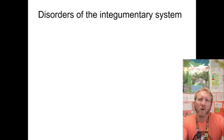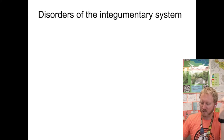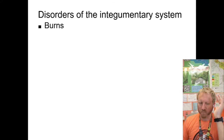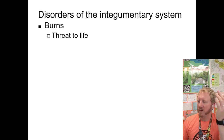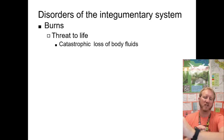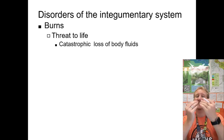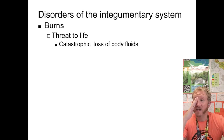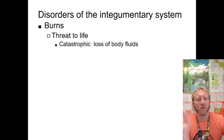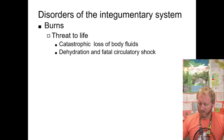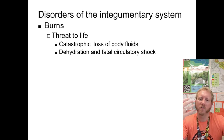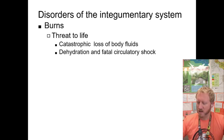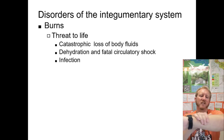Every organ system we study includes what happens when it breaks down. For the integumentary system, a significant form of damage is burns, which are very serious — they pose a major threat to life because they can cause catastrophic loss of body fluids. Skin normally keeps moisture in; without it, dehydration and circulatory shock can occur, along with severe blood pressure drops.